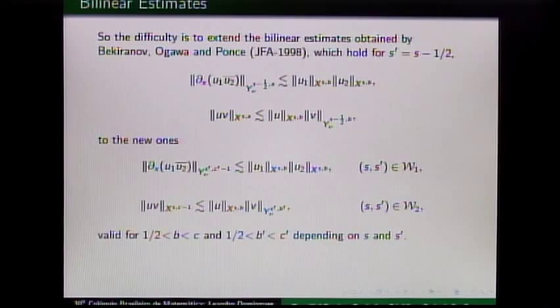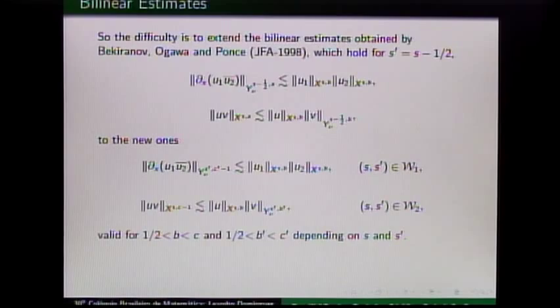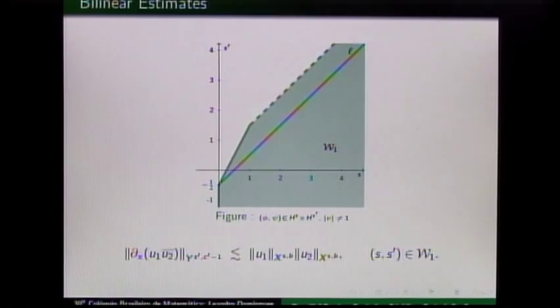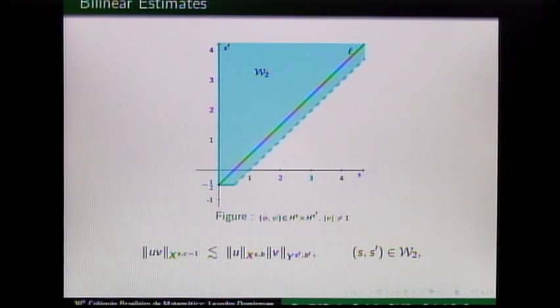All the difficulties come from extending the bilinear estimates obtained by Becheranova-Gawa-Pons, which they proved only for this specific regularity. We extend them to a wider region. The strategy is to couple the regularity here for the spatial and the modulation B, replace S minus one-half with S prime, decouple B prime, and refine the counts. We could extend the first bilinear estimate from the half-line to one region, and for the second nonlinearity, we extend from the half-line to another region. For the contraction argument, we need both estimates, so we have local well-posedness at the intersection of the two regions.